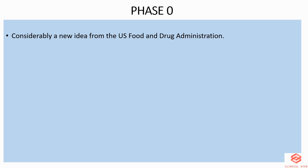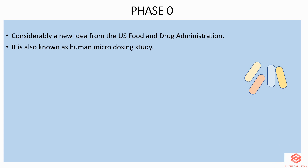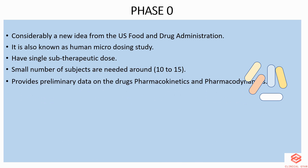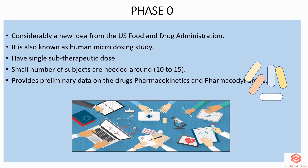Before phase 1, there is another phase called phase 0. This phase 0 is a relatively new concept from the US Food and Drug Administration, though it is not mandatory. It is also known as human microdose studies, as single subtherapeutic doses are given to 10 to 15 subjects. A subtherapeutic dose is a dose which is too low to cause any therapeutic effect. Pharmaceutical companies perform these studies to decide which drug candidate has the best pharmacokinetic parameters in humans, including compounds or derivatives never previously exposed to humans. If a medication acts differently than expected, the investigator will likely conduct additional preclinical research before deciding whether to continue with the trial.